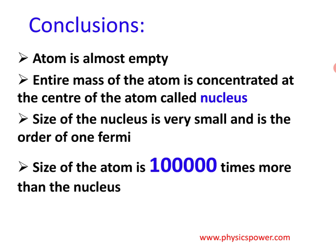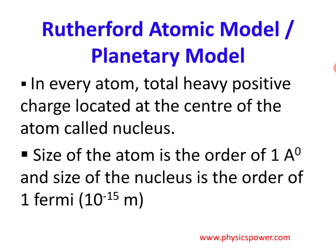Based on these conclusions, let's see how the theory was formed. In every atom, the total heavy positive charge, according to the experimental details, is located at the center — the nucleus — and the nucleus size is very very small. Compared to the atom, it is one lakh times smaller. Also, some additional details were discussed: the nucleus shape is spherical.